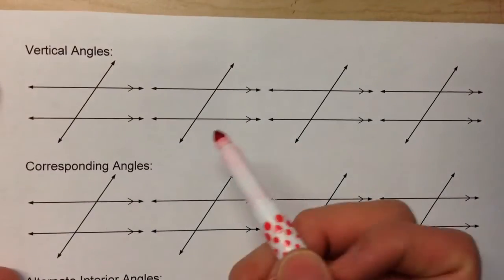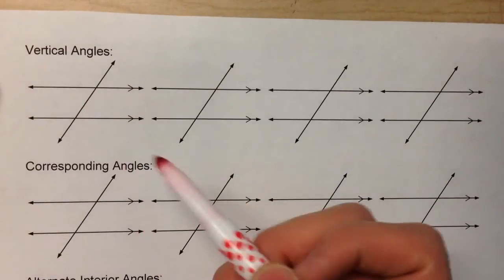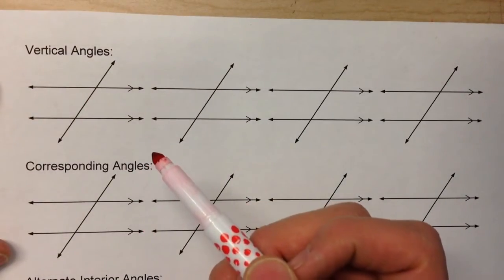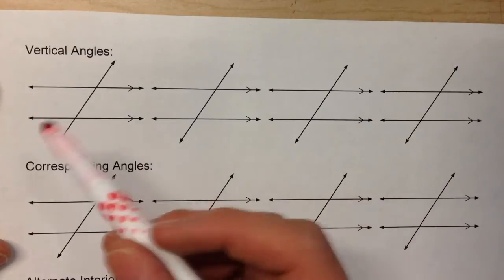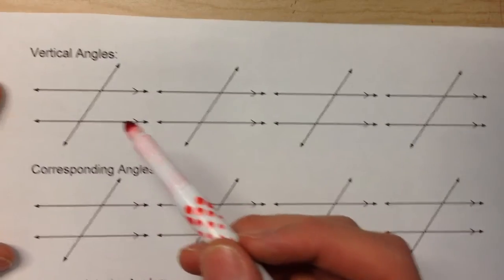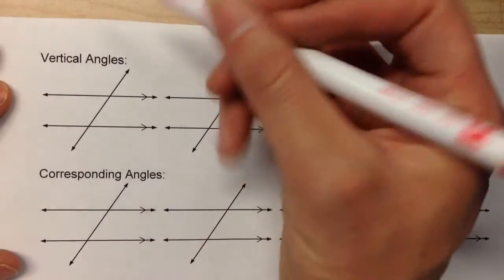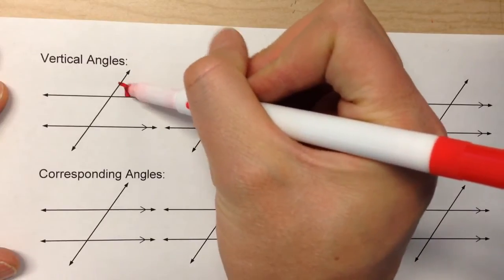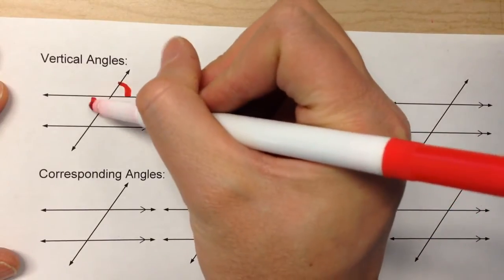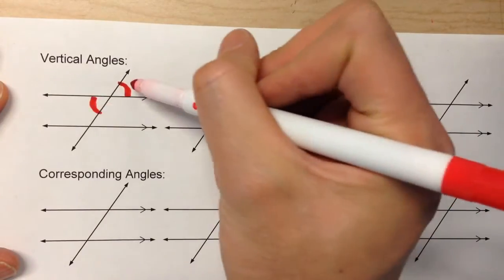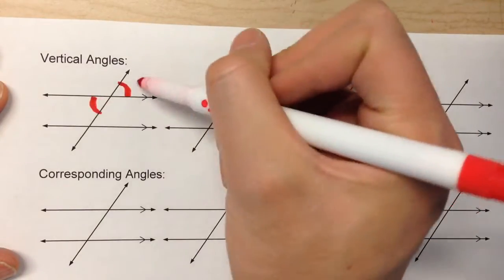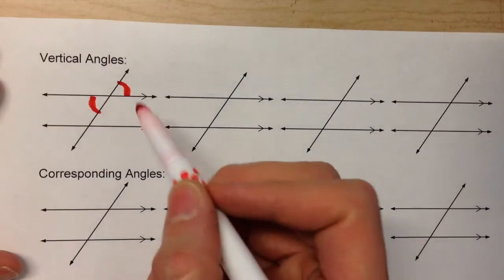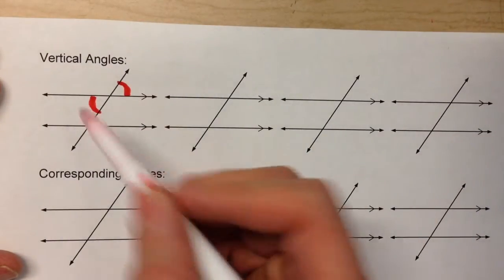For example, vertical angles, which we learned a couple of days ago, are angles that are diagonally across from each other when two lines intersect. So for example, right here, this angle and this angle are diagonally across from each other, so they're equal in measure because they're vertical angles.